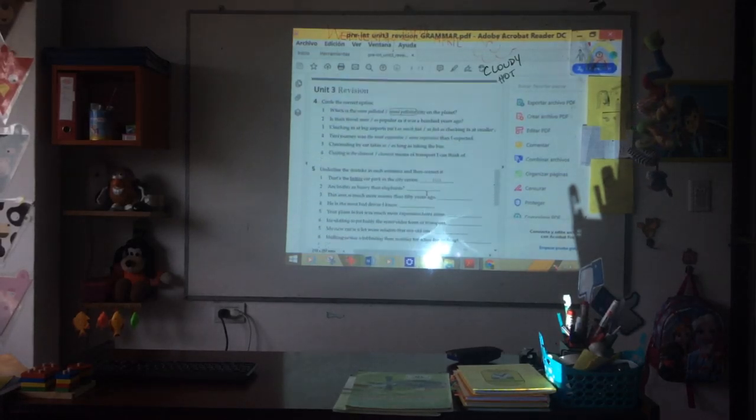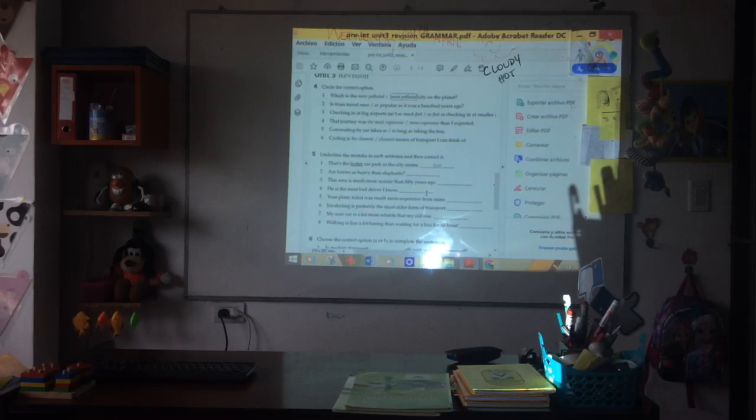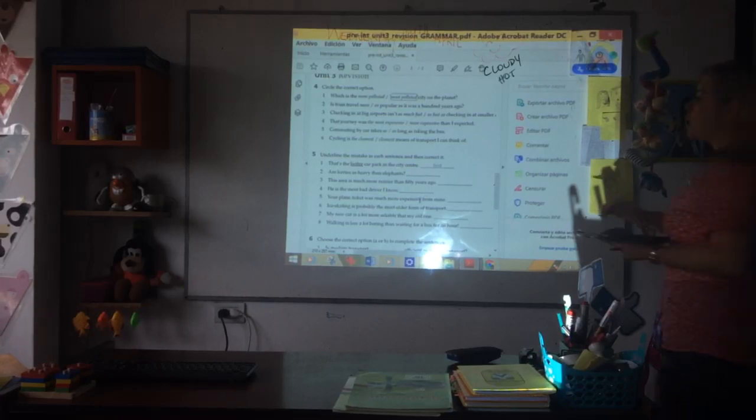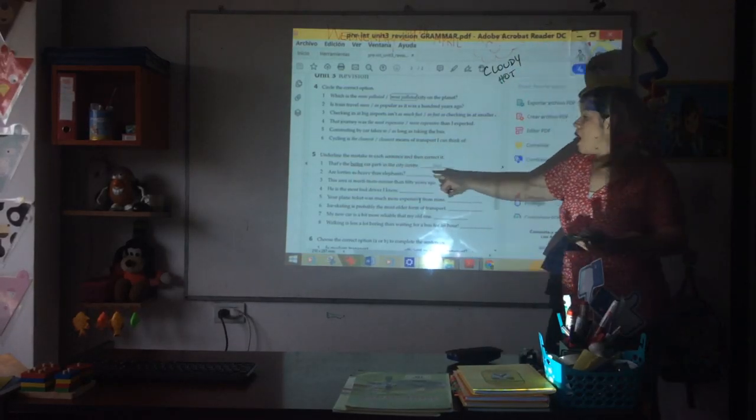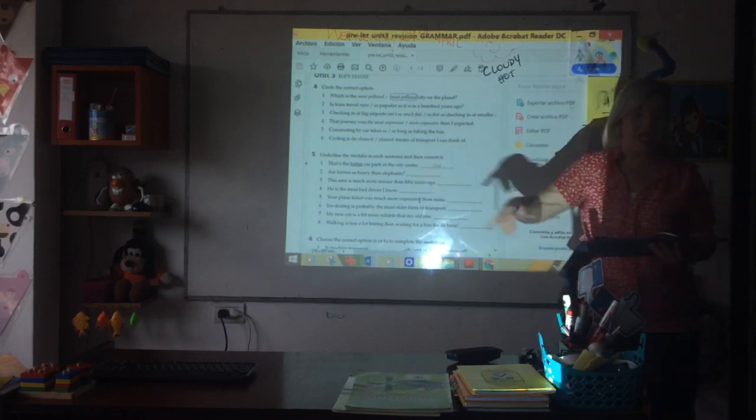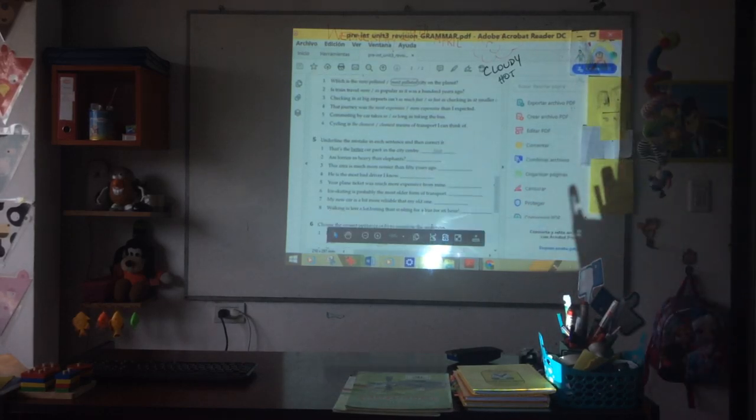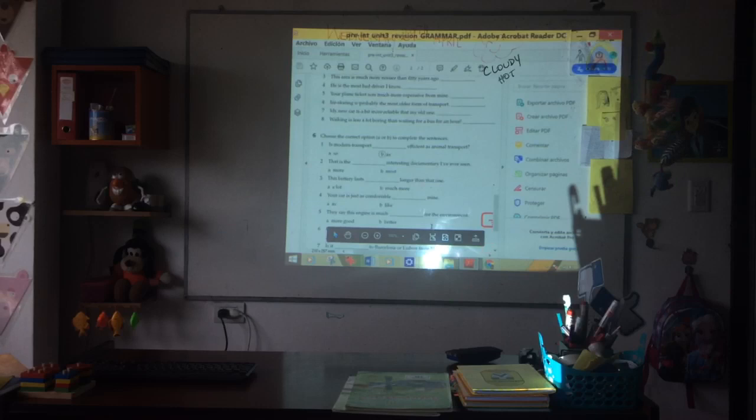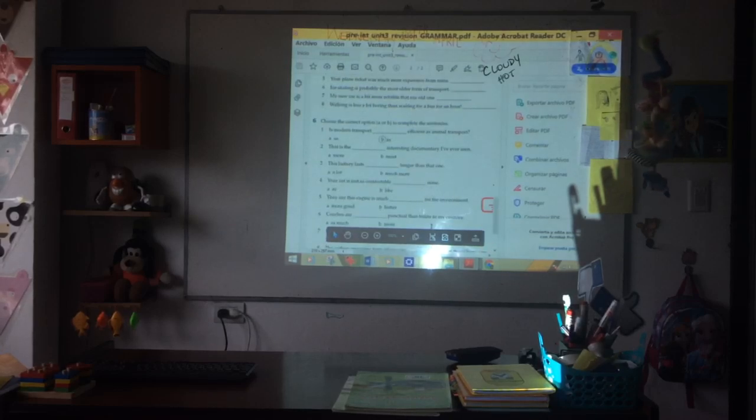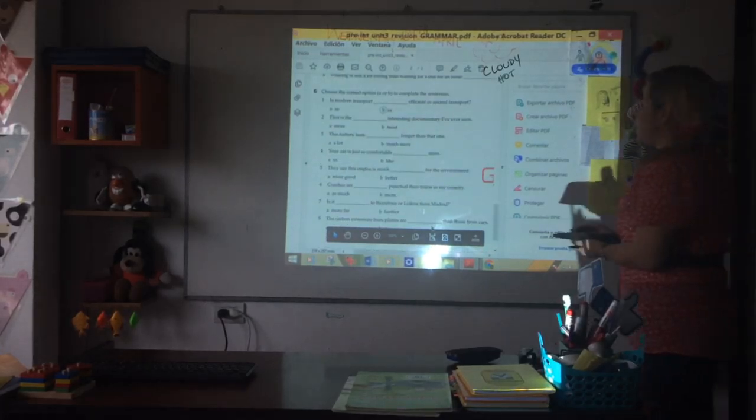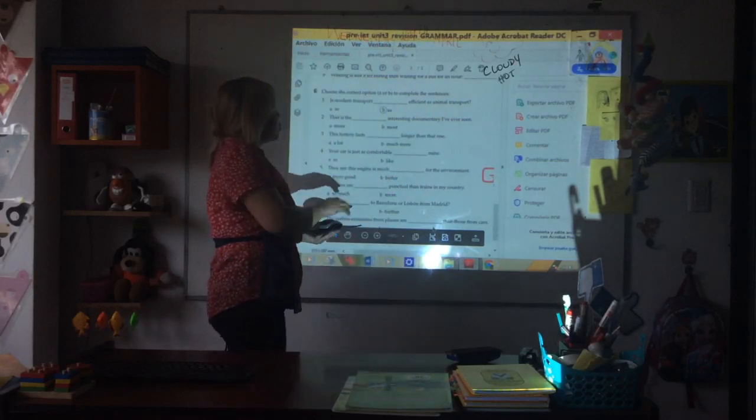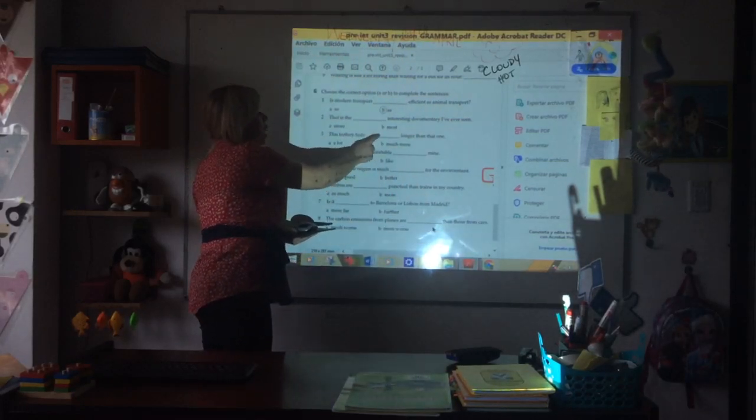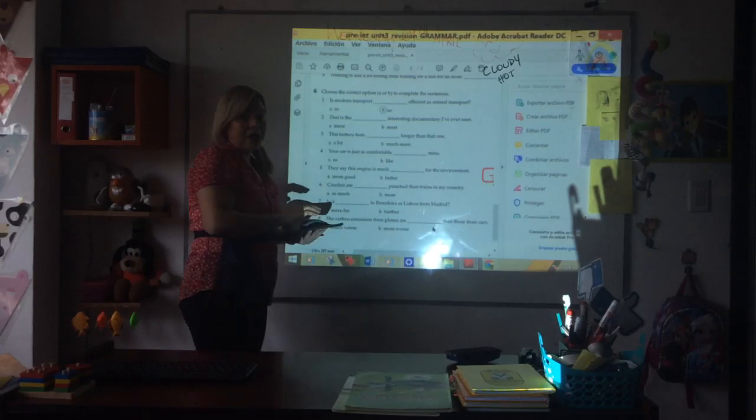Circle the correct option. Underline the mistake in each sentence and correct the mistake in the space. Is it clear? In exercise six, choose the correct option A or B to complete the sentence. Choose and complete here, circle and complete there. That is all from the grammar part.